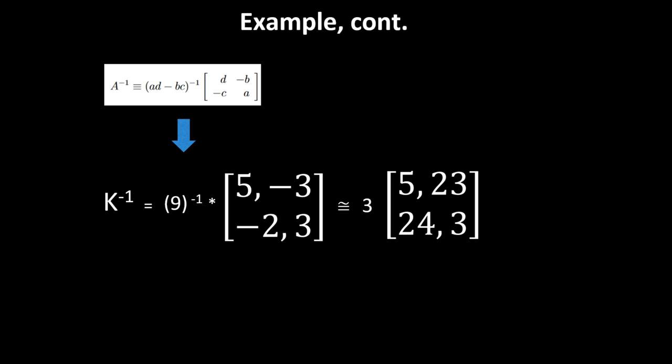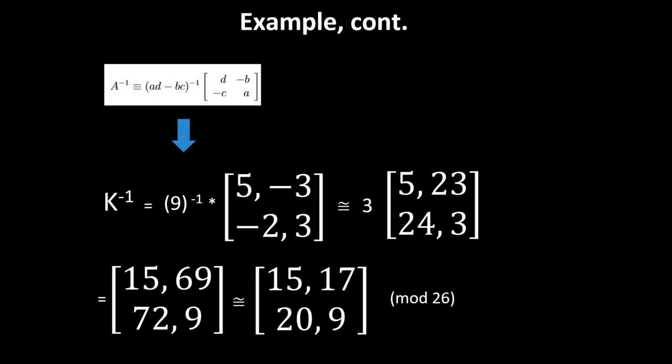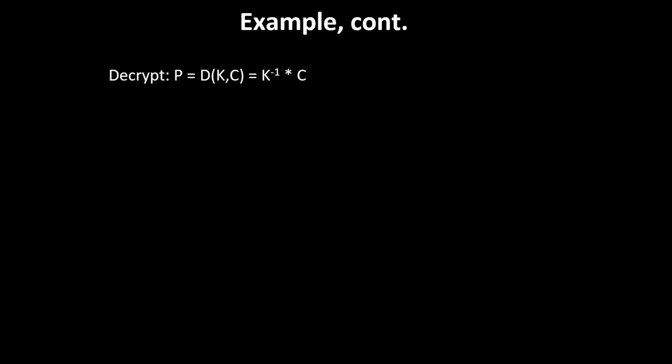The inverse of 9 in modulus 26 is 3. 5 modulus 26 is 5. -3 modulus 26 is 23. -2 modulus 26 is 24. In the matrix, the modulus 26 is applied to each element. If we multiply everything by 3 and take modulus 26, we get the resulting matrix [15, 17; 20, 9]. That is the inverse of K in mod 26.